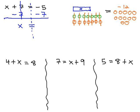The x is alone, which is what we want, and on the other side, we've got 5 negatives and 7 negatives, giving us a total of 12 negatives. The value x represents in this equation is negative 12.